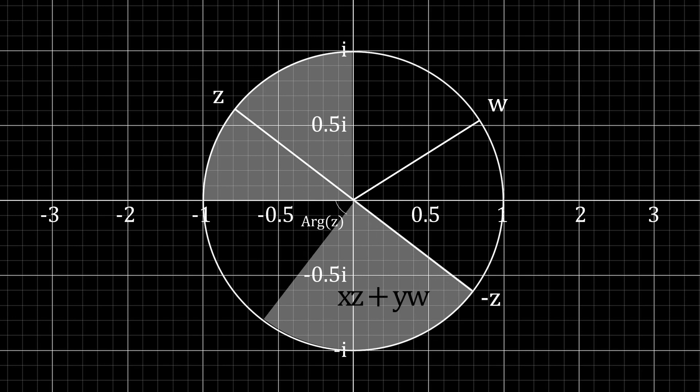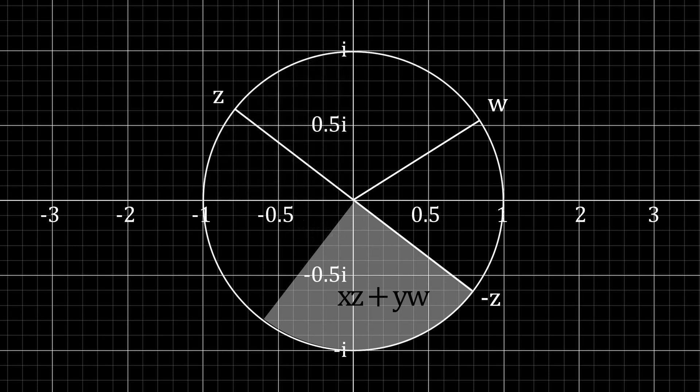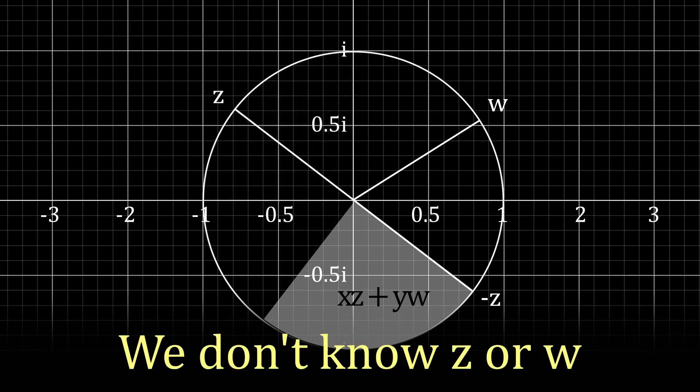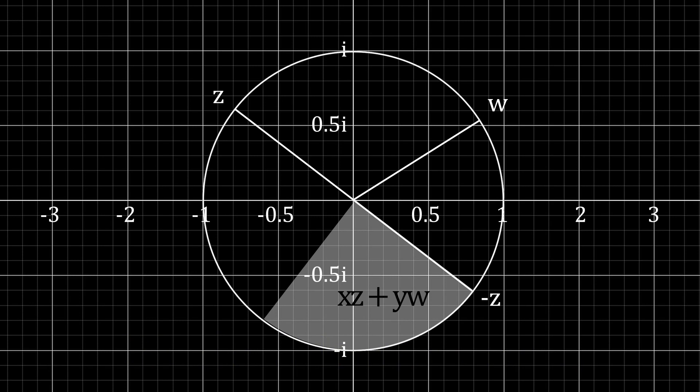Here we are, xz plus yw must land somewhere in this section. Keep in mind that we don't actually know what z or w is, and that we're simply using this as a visual example. Remember how earlier I told you to think of z and w as vectors? This is where that becomes useful.